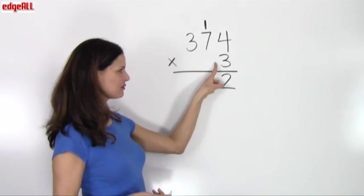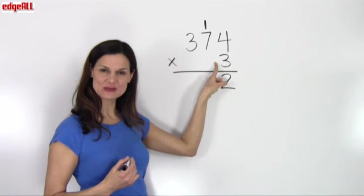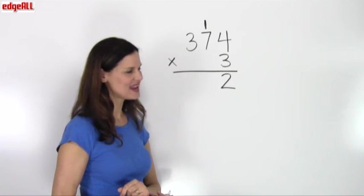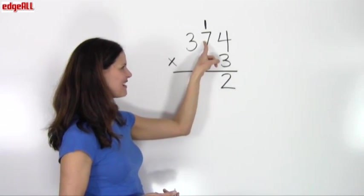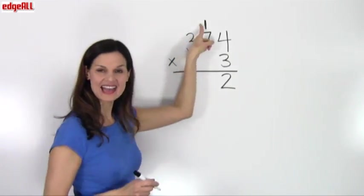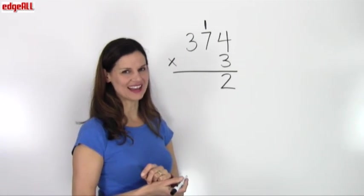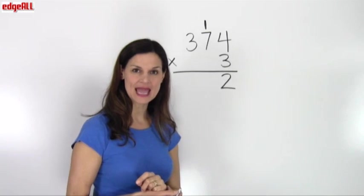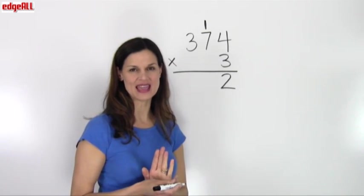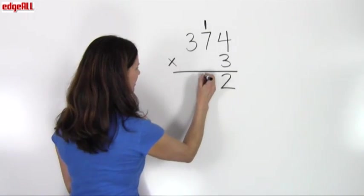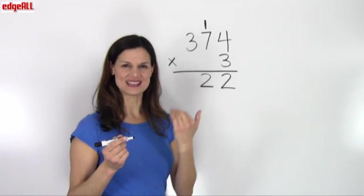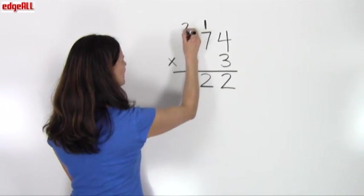Now I multiply 3 by the digit in the tens place of 374, which is 7. So 3 times 7 equals 21, but I'm not finished yet — I have to add this 1 that I regrouped to my 21, which gives me 22. I'm going to regroup again: I put the digit in the ones place of 22, which is 2, in my answer, and the other 2 — that's the part of the 20 — regroups and goes over to the next column.